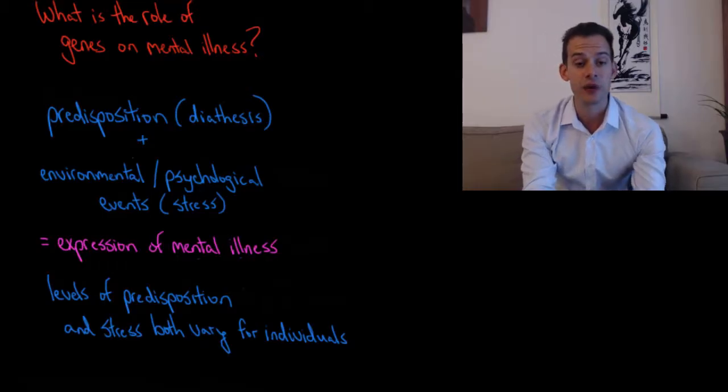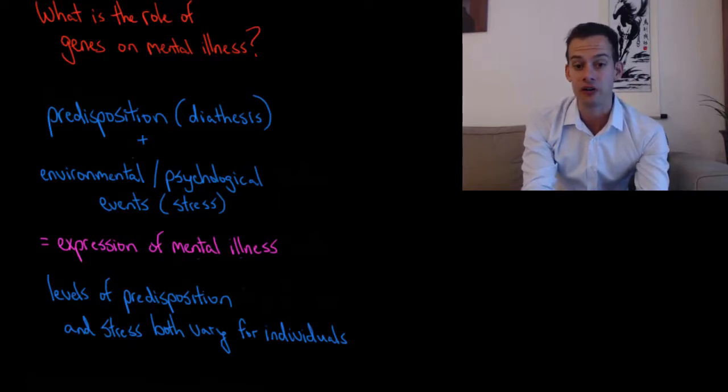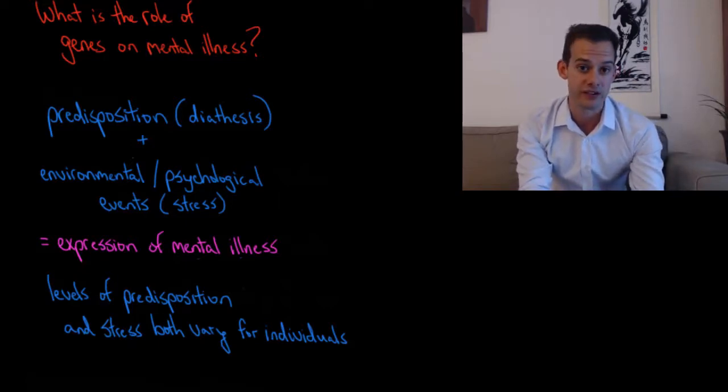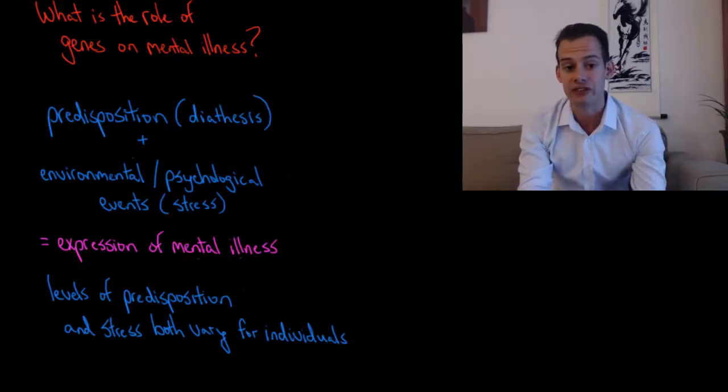The diathesis refers to a genetic predisposition for a particular mental illness and the stress refers to the environmental and psychological events that the individual experiences. It's the combination of this predisposition and stress that leads to the expression or not of a particular mental illness.